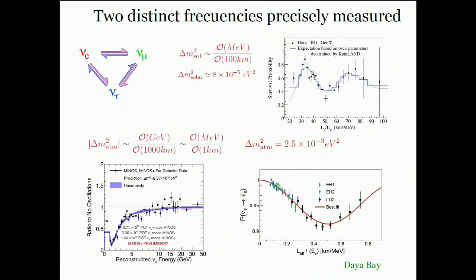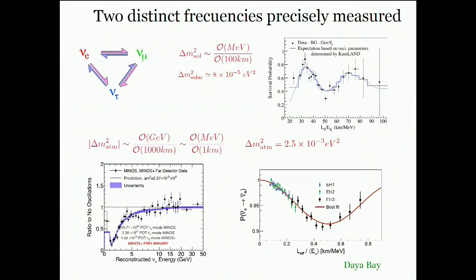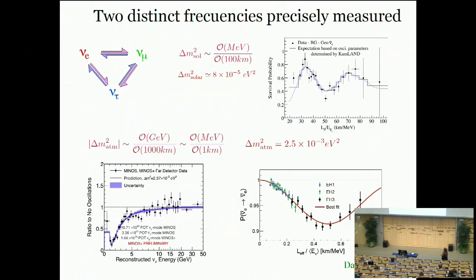Two distinct oscillation frequencies have been precisely measured. The smaller Δm² of about 10^{-4} eV² has been measured using reactor neutrinos at distances of ~100 km, and the larger one — Δm² of about 2.5×10^{-3} eV² — has been measured using accelerator neutrinos at distances of ~1000 km for GeV energies and also using reactor neutrinos at shorter distances for MeV energies.